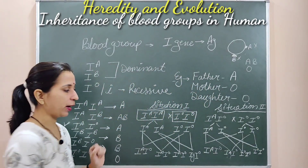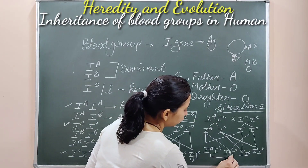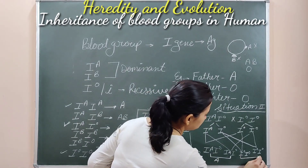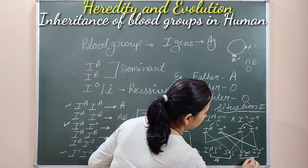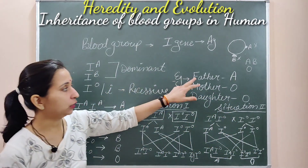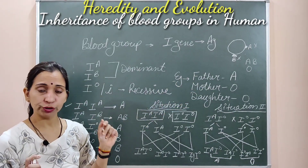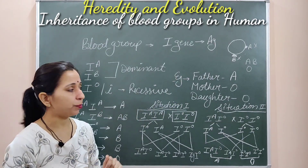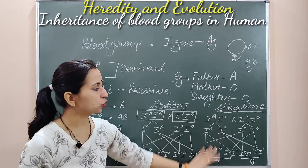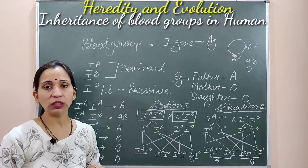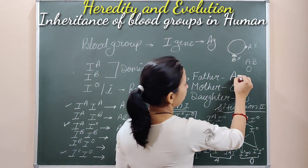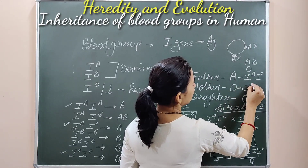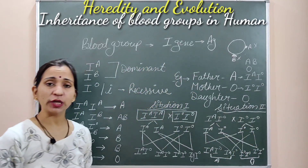So 50% of progenies will have the A blood group (Ia-Io) and 50% will have the O blood group (Io-Io). This matches our question, where the daughter has O blood group. Therefore, the father's genotype is Ia-Io (heterozygous) and the mother's genotype is Io-Io.